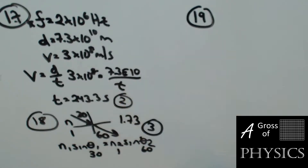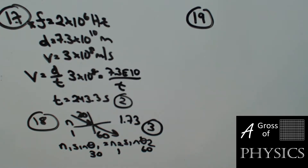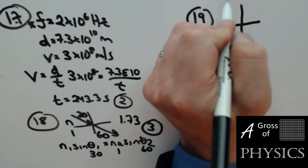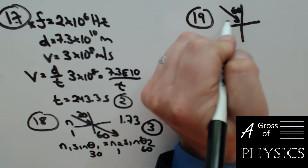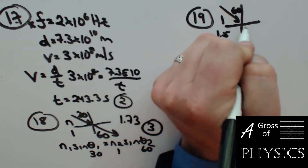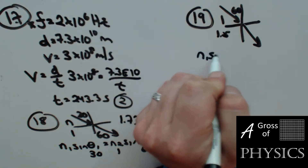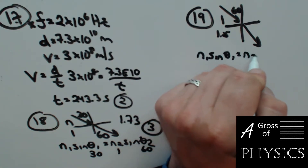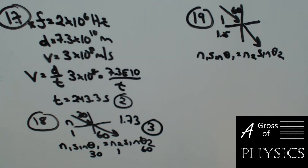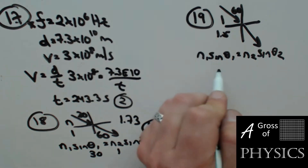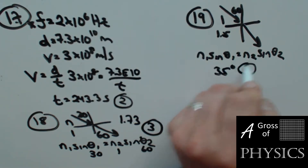Number 19: a ray of light is incident on a block of lucite at 60 degrees from the normal. Lucite has index 1.5. We want to find the angle of refraction — this problem sounds familiar, and that's because it is. Using 1 times sine 60 divided by 1.5, taking the inverse sine gives 35 degrees again. Well, we're at least consistent.